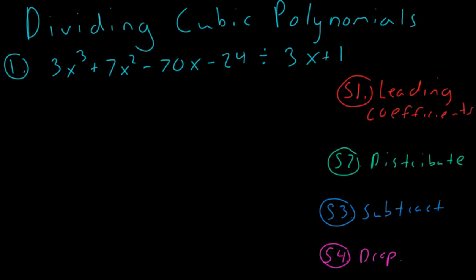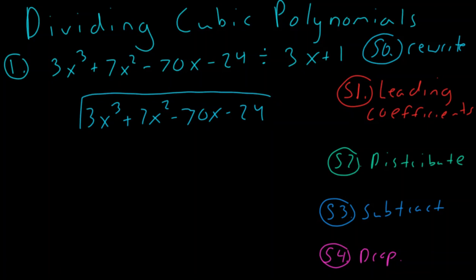we have 3x cubed plus 7x squared minus 70x minus 24 is being divided by 3x plus 1. Well, you could call this kind of your step zero. The very first thing we want to do is simply rewrite this in a long division format. So we've got 3x cubed plus 7x squared minus 70x minus 24, and we'll use our long division bar, and we'll put this 3x plus 1 right here.